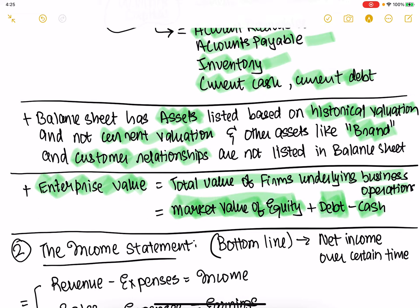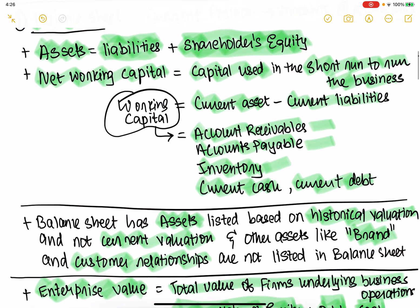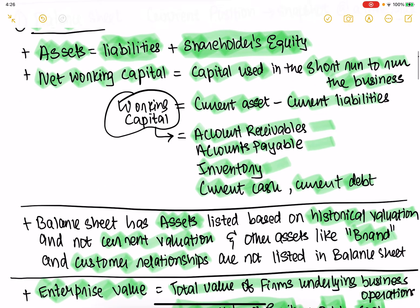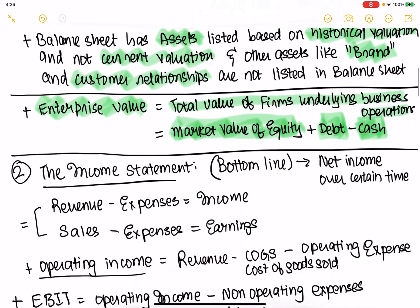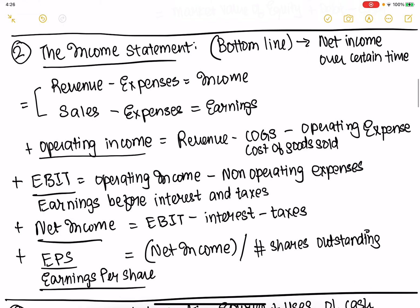This is what the market is willing to pay you, plus the debt you've taken on, minus the cash. So enterprise value is the total value — if you were to liquidate this company right now, what would people be willing to pay? It's an important concept. So the balance sheet has some drawbacks, and net working capital and enterprise value are the two key takeaways from the balance sheet.